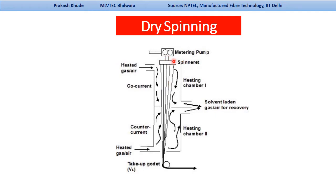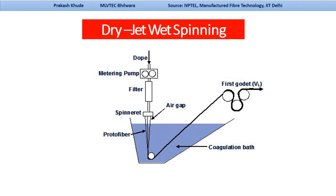In wet spinning, the spinneret is kept inside the coagulation bath and the solvent is removed by chemical means. In dry spinning, the solvent is evaporated by hot air. In dry jet wet spinning, the spinneret is kept in the dry state and below it there is a coagulation bath. The air gap maintained between the spinneret and the coagulation bath depends on which type of fiber is being produced — whether lyocell, acrylic, or others.